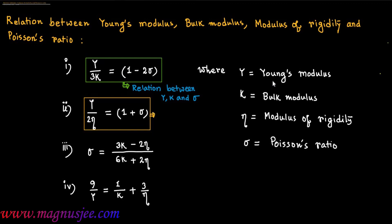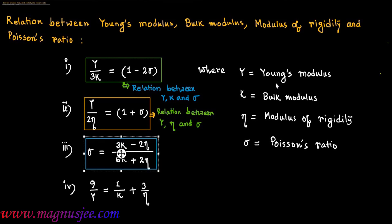The second relation is Y/2η = 1 + σ, which is the relation between Young's modulus Y, Modulus of Rigidity η, and Poisson's ratio σ. The third relation is σ = (3K - 2η) / (6K + 2η).